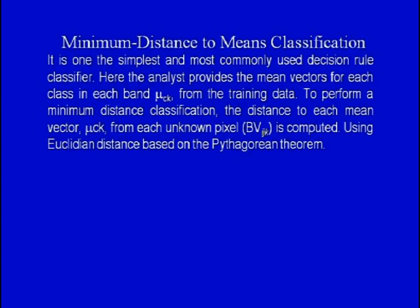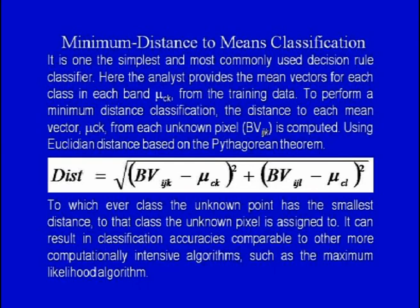The minimum distance to means classifier is one of the simplest and most commonly used decision rule classifiers. The analyst provides the mean vectors of each class in each band from the training data. The Euclidean distance from each unknown pixel (represented as BVijk) to each class mean vector is computed using the Pythagorean theorem. The unknown pixel is assigned to whichever class has the smallest distance. This can result in classification accuracies comparable to more computationally intensive algorithms such as maximum likelihood.